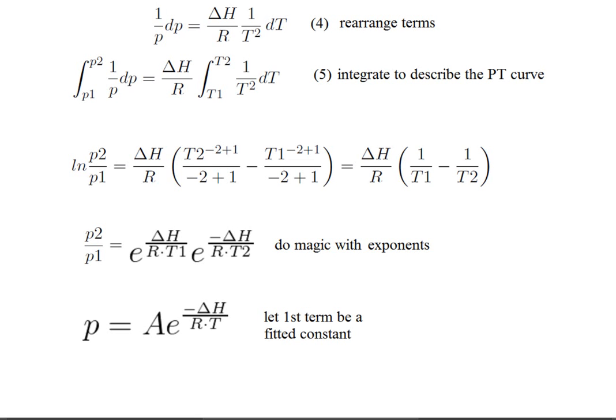Now I've moved P1 to the right and then replaced P times the exponent with a constant, A. If we know exactly some P1 and T1, then A could be calculated rather than fitted, but then any dependence of delta H on temperature would really show up.